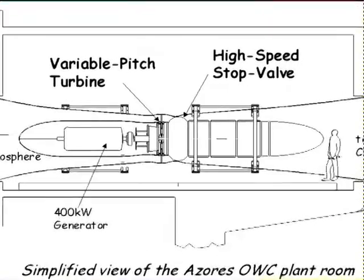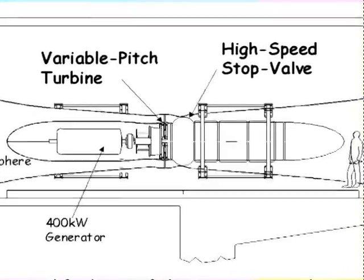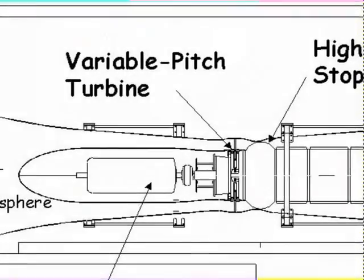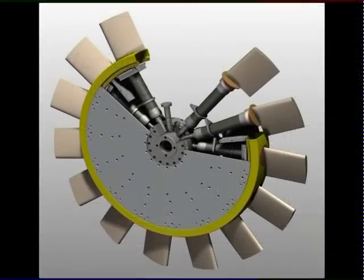By this time we had also suggested that it would be worthwhile installing a high-speed stop valve between the turbine and the wave chamber, and in 1996 we started work on the two systems.